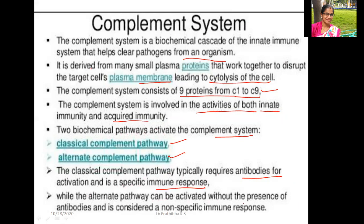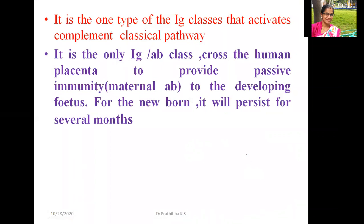The classical complement pathway typically requires antibodies for activation and is a specific immune response, while the alternate pathway can be activated without antibodies and is a non-specific immune response. IgG is responsible for activating the classical complement pathway. IgG is also the only immunoglobulin class that crosses the human placenta to provide passive immunity — maternal immunity to the developing fetus.